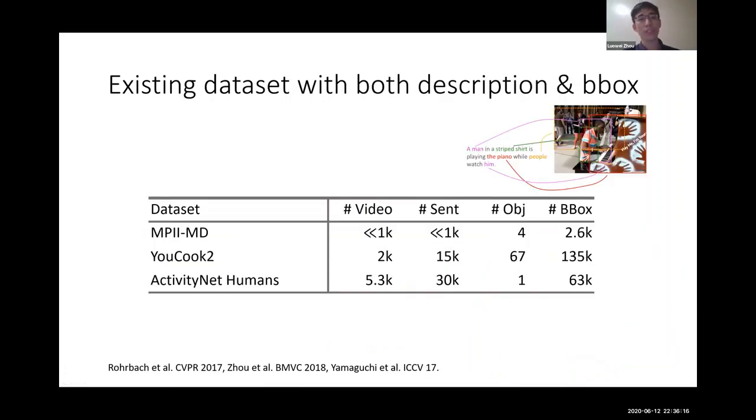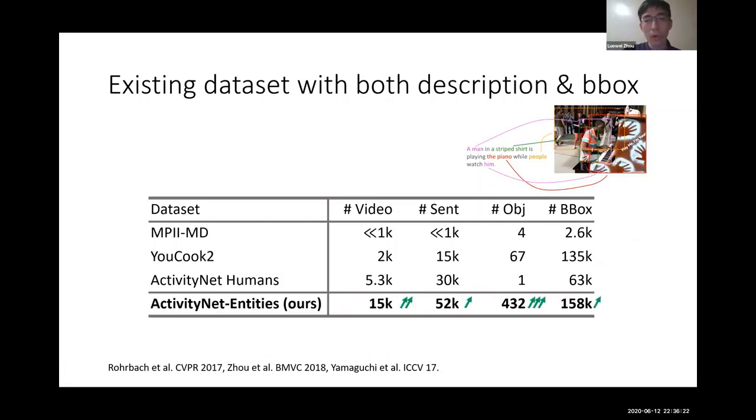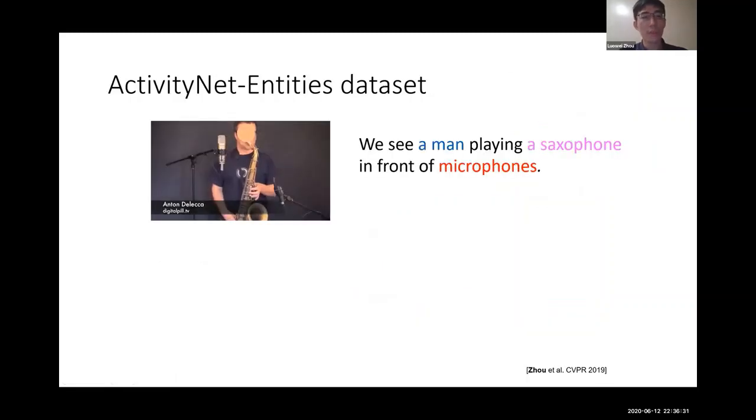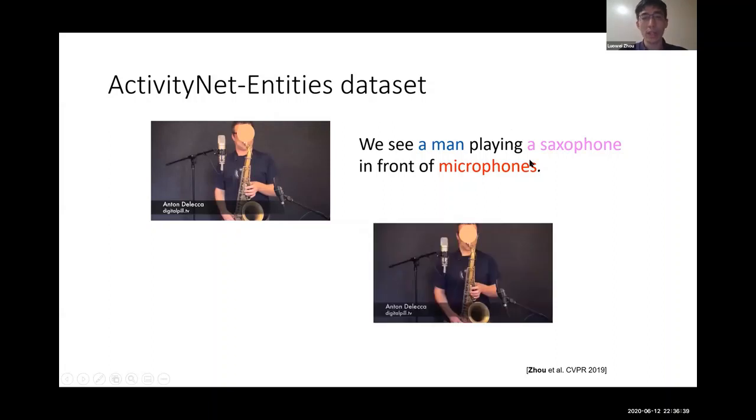And compared to existing datasets with both descriptions and bounding boxes, our ActivityNet Entities has more bounding boxes and has a variety of object categories. So here's one example from our dataset. So we identify all the noun phrases in the caption, also the objects, and then locate them in the sample video frame.